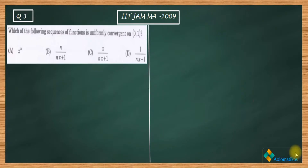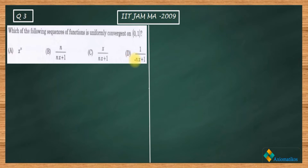Hello dear students, welcome to Axiomatic course. This video is part of the solution series for IIT JAM 2009. We are here with Problem 3 of your paper, which is from the topic of Analysis. The question asks which of the following sequences of functions is uniformly convergent on the open interval (0,1). We have four functions to check, and I will begin with the first function, Option A.